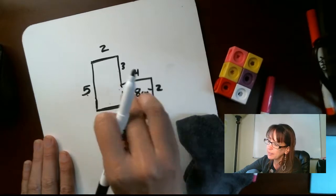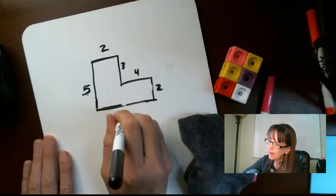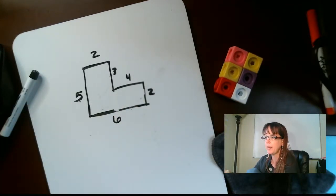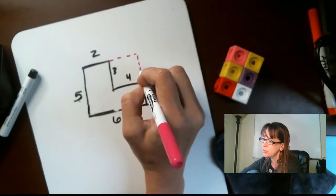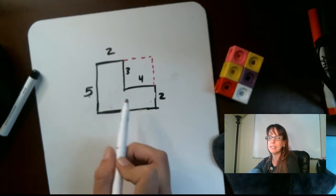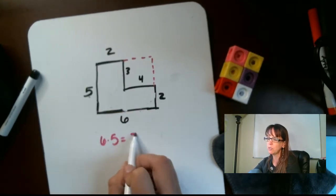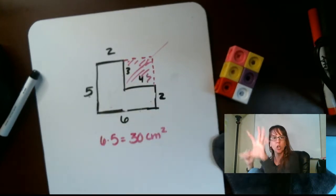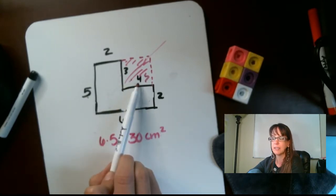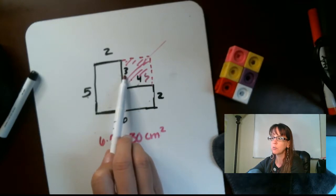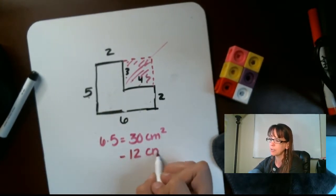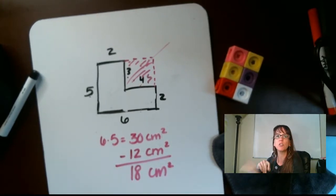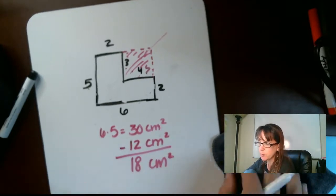There's also a second method. We can see that there's a larger rectangular shape here with a base of 6 and a height of 5. Six times 5 equals 30 centimeters squared. But we've taken a bite out of that. The dimensions of that bite are base 4 times height 3 — four times 3 is 12. So we subtract 12 centimeters squared, which gives us 18 centimeters squared. Two different methods, same answer.